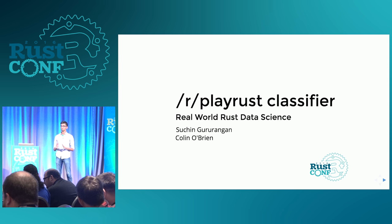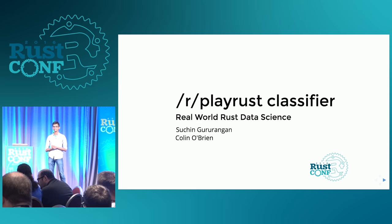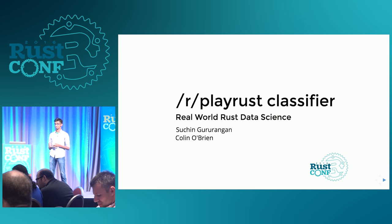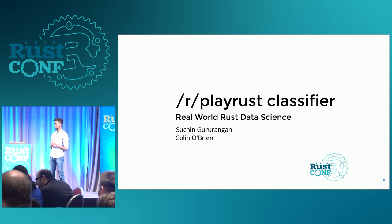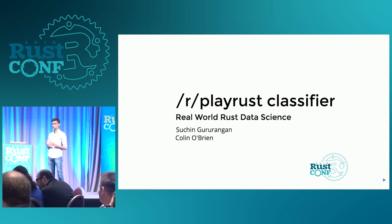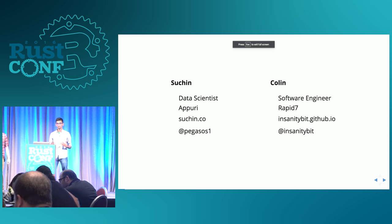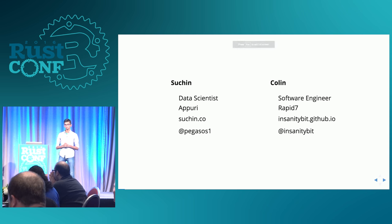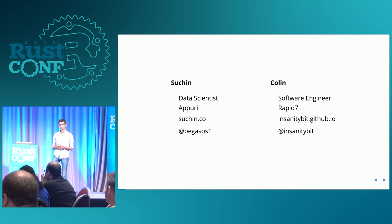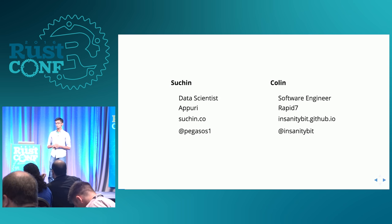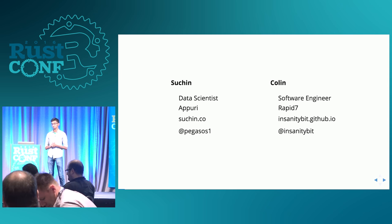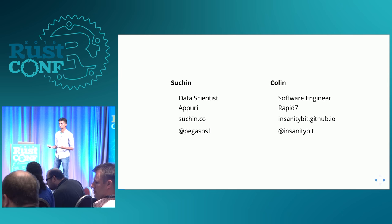We've talked a lot about challenges in the Rust community, and one we're going to be talking about today is a pretty harrowing one if you've been part of the Reddit community. This is our over-engineered solution to it. My name is Sachin Gurungan. I'm a data scientist at a Seattle startup called The Query. We focus on applying machine learning to user retention management. You can catch me on my site, Sachin.co, and my GitHub handle, Pegasus1.